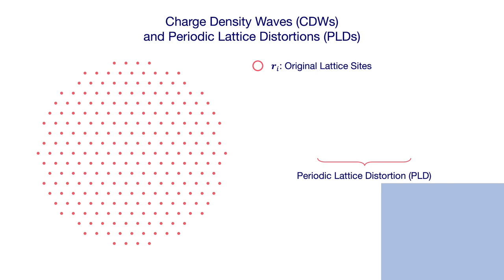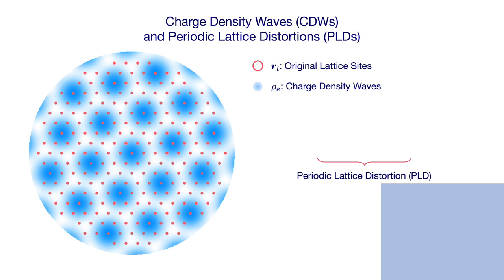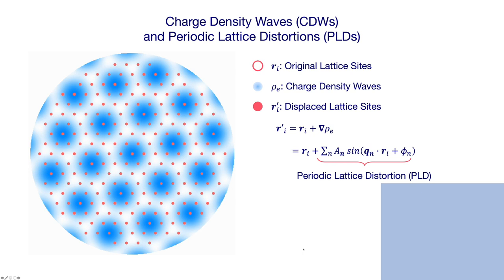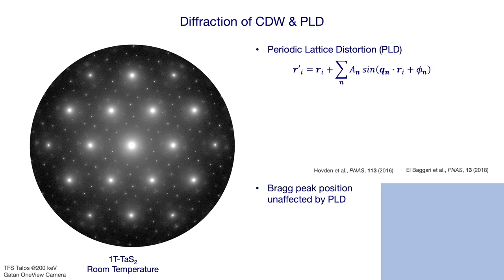Let's dig into charge density waves for tantalum disulfide. The blue patches are regions of high-density charge, and the red atoms represent the tantalum sites. The charge density wave is ordered and periodic, with charge maxima lying atop the center of the tantalum sites. Because the charge lattice and crystal lattice are locked together, we say they're commensurate — this represents the low temperature commensurate phase. Electron diffraction is quite sensitive to the positions of nuclei, and the periodic modulations in the lattice produce noticeable superlattice peaks. On the left is a diffraction pattern of the room temperature charge density wave in tantalum disulfide — the brightest peaks are the Bragg peaks, and the smaller peaks between are the superlattice peaks from the periodic lattice displacements.